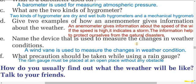Name the device used to measure the changes in weather conditions. A wind vane is used to measure the changes in weather conditions. What precaution should be taken while using a rain gauge? The rain gauge must be placed at an open place without any obstacle.